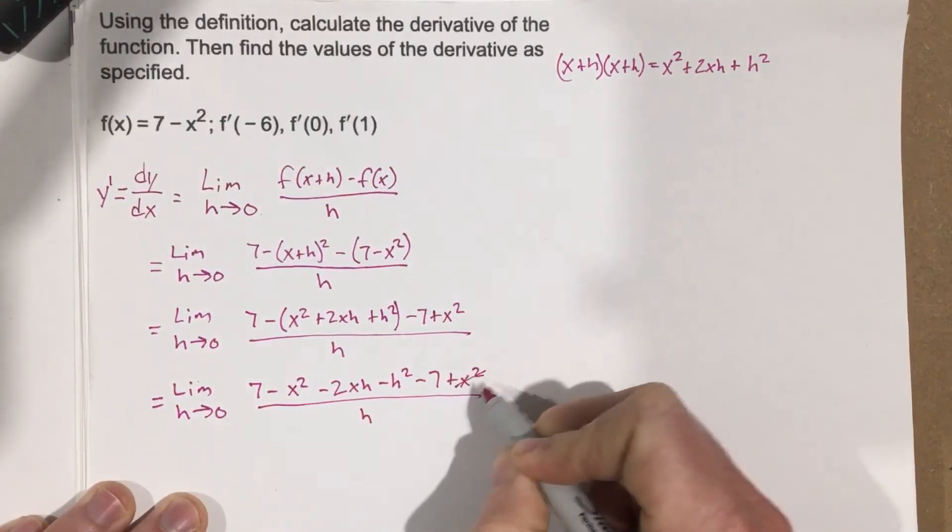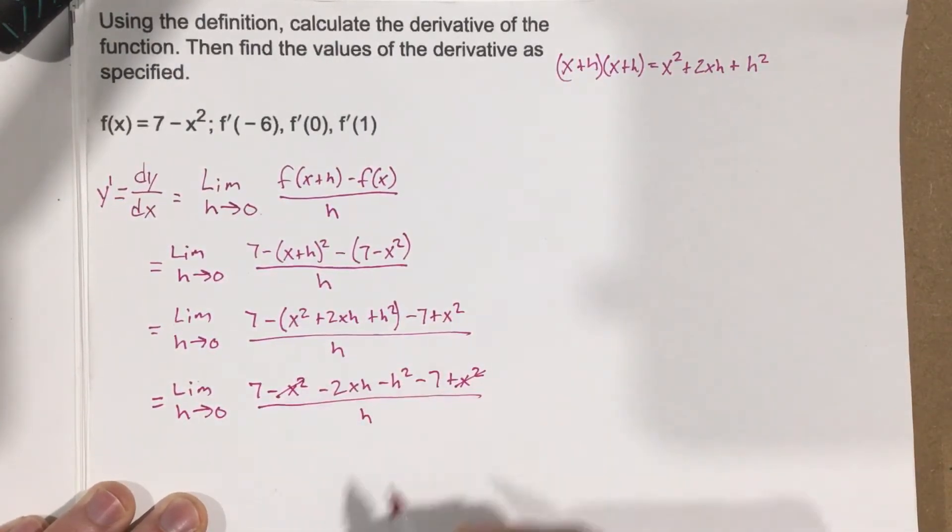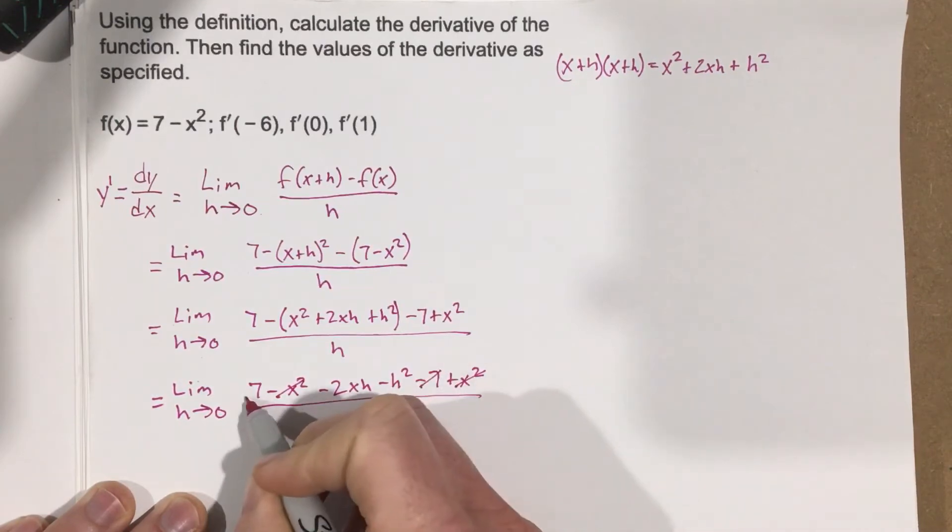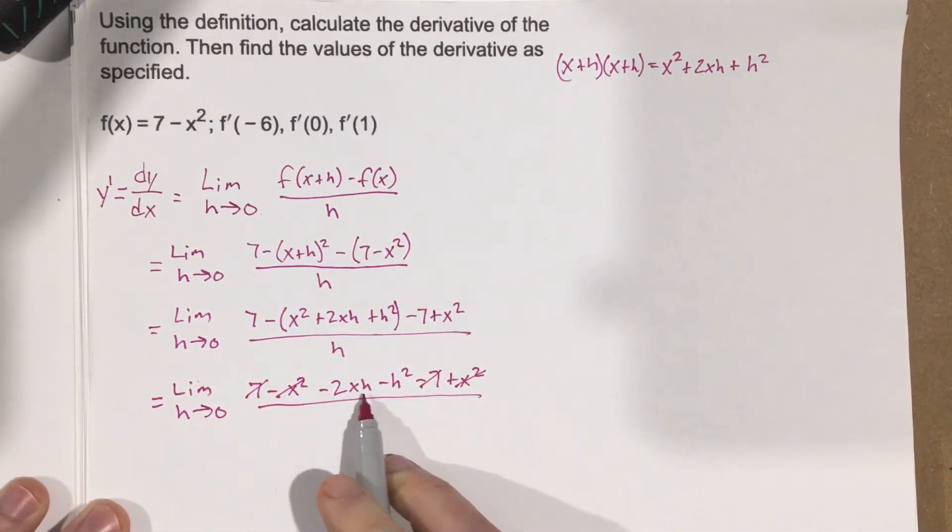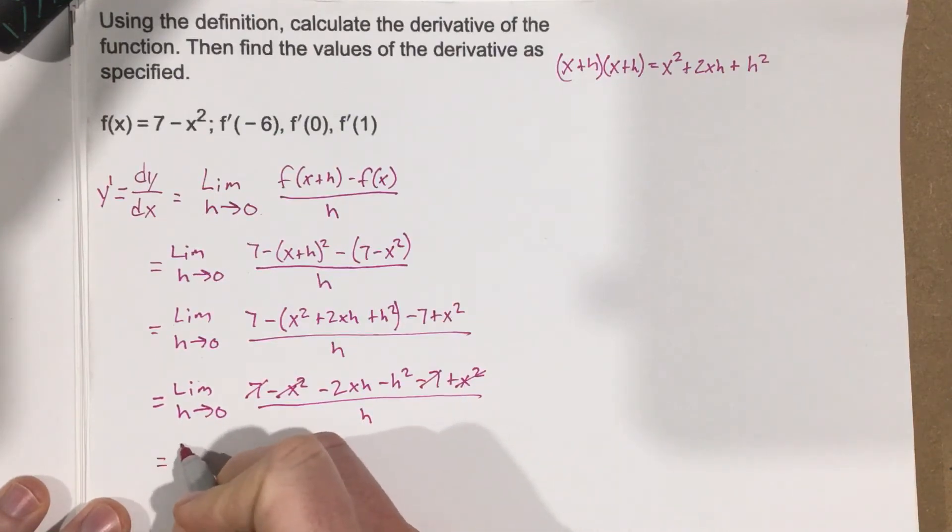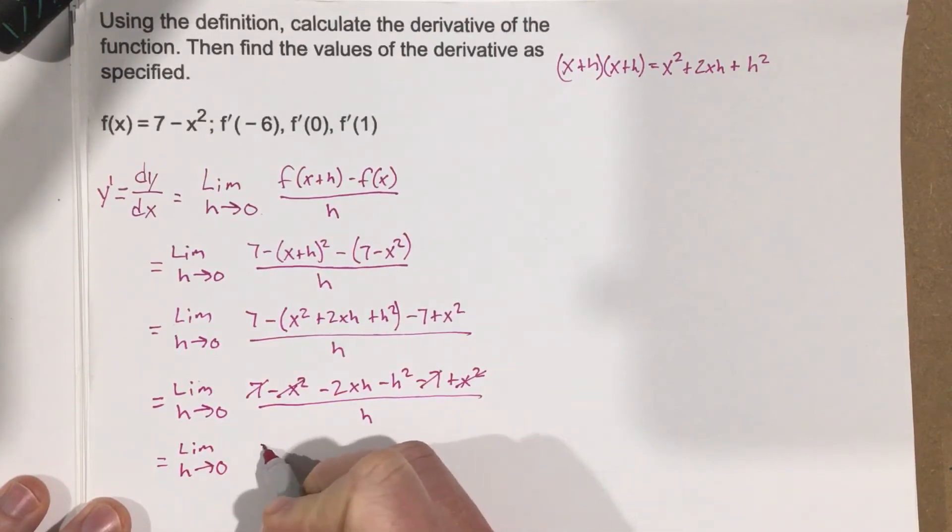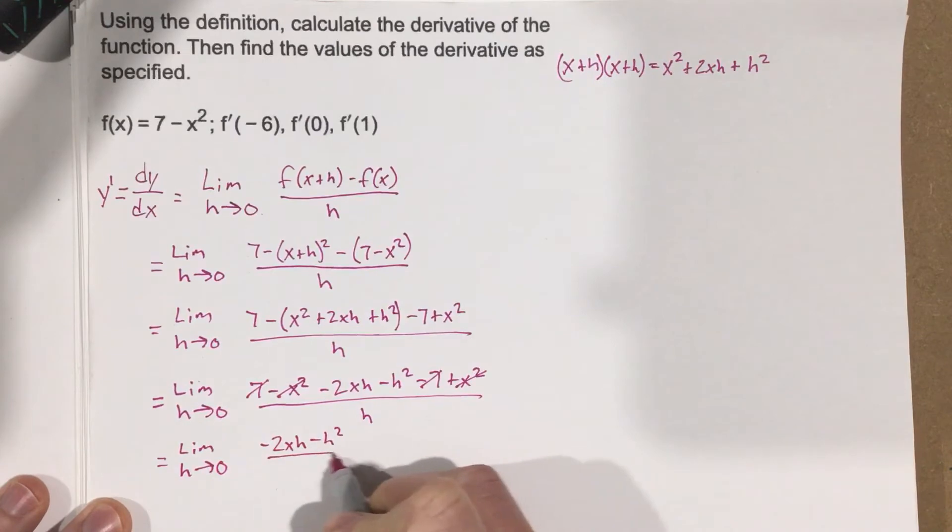The x squared cancels with the negative x squared. The negative 7 and the 7 cancel. We're left with just negative 2xh minus h squared. So, it's limit as h approaches 0 of negative 2xh minus h squared all over h.